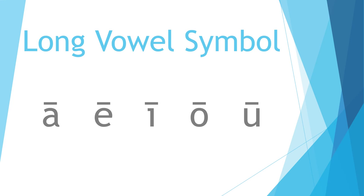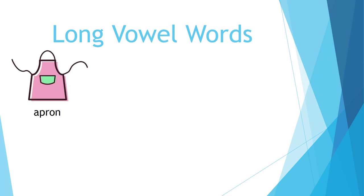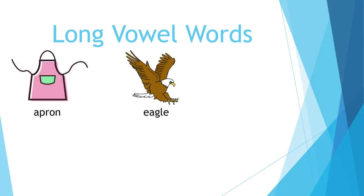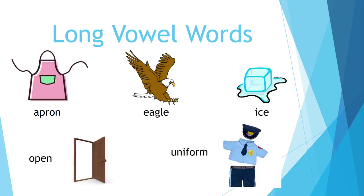Long vowel sound words — the long vowel says the name of the letter in the alphabet. Words with the long vowel sound: A — Apron. E — Eagle. I — (long I). O — Open. U — Uniform. Notice that in each one of these words the long vowel sound says the very letter.